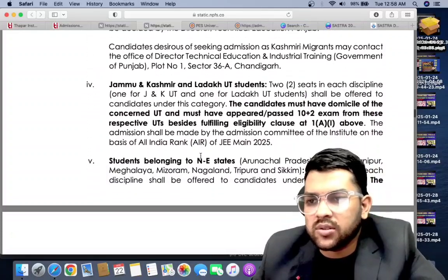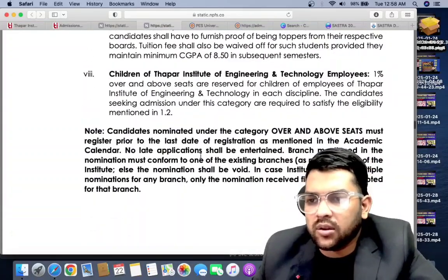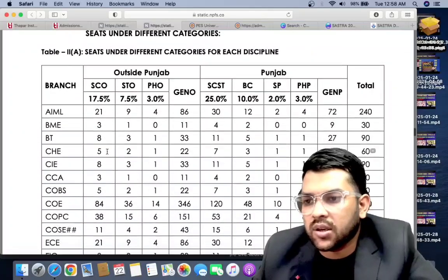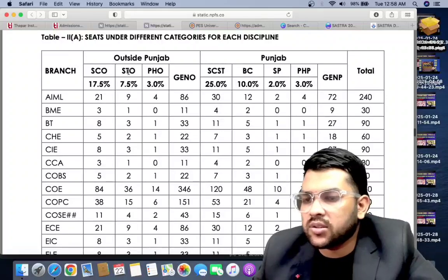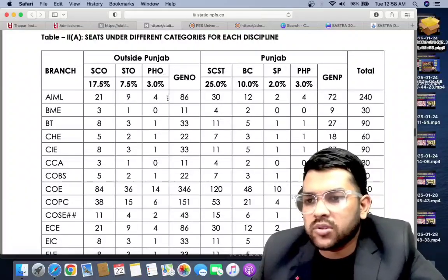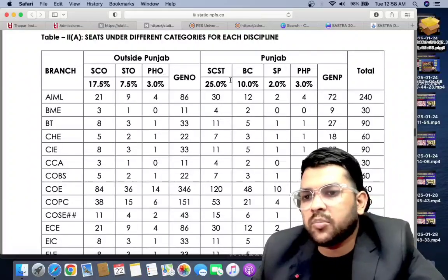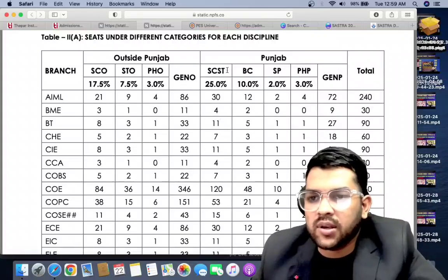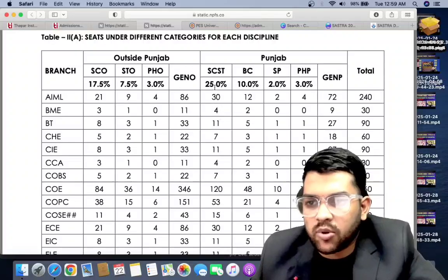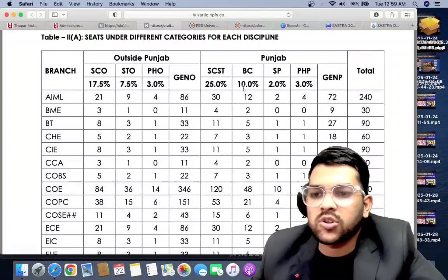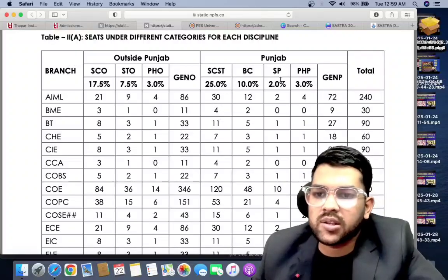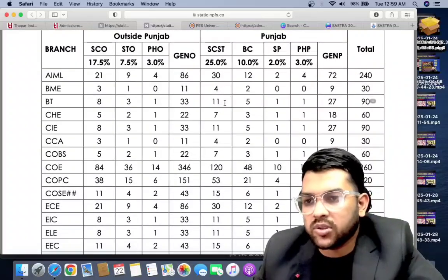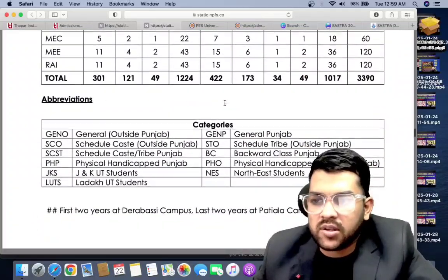Jammu Kashmir also - some seats are reserved for them. These are the reservation information. You can check seats under each category: SC outside, ST outside, PWD outside, and general outside - 86 seats are there. In Punjab, 25% seats are reserved - lots of reservation. BC 10%, SC/ST, PHP 3%, and general Punjab 72%. Like this all the seats are reserved for different types of branches.